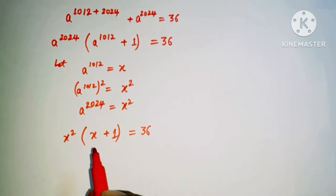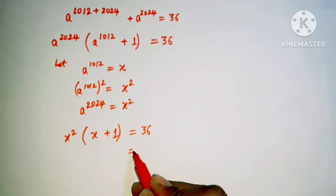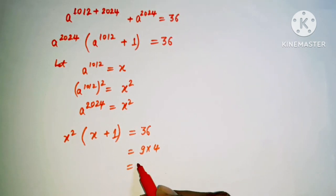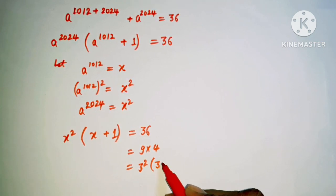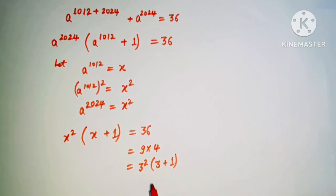Now we can see easily here this is just factor of 9 and 4, and 9 is just a square of 3. So here 3 square and 4 can be written as 3 plus 1, because I need to put here the bases are same here 3.